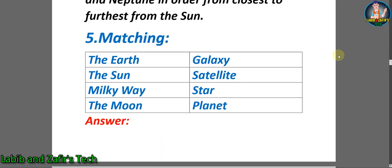Now students let's go through a matching. Here we can see a chart. In the left column: the Earth, the Sun, Milky Way and the Moon. In the right column: Galaxy, Satellite, Star, Planet. Now let's see the answer.